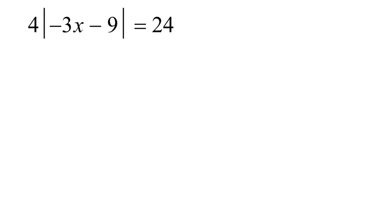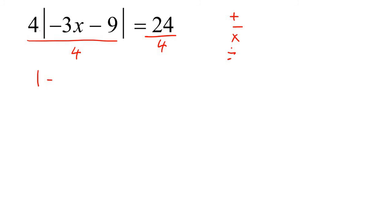Two more examples. Is the absolute value by itself? No — look at that 4, that needs to go. We always want the absolute value by itself. Do not multiply the 4 into the bracket — that's a common mistake. Instead, take it to the other side. Since the 4 and the absolute value are currently being multiplied, we do the opposite and divide both sides by 4. You end up with the absolute value by itself, and 24 divided by 4 is 6.